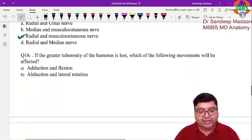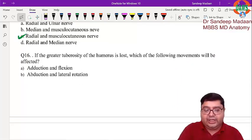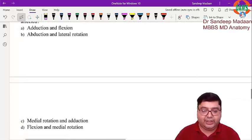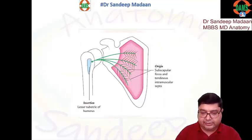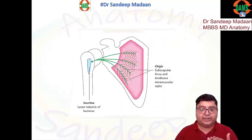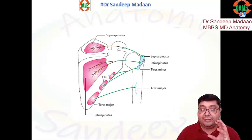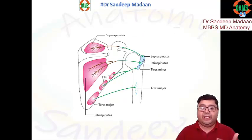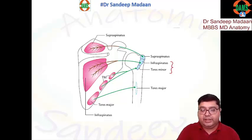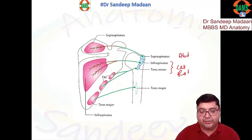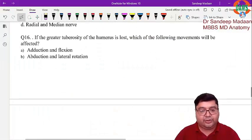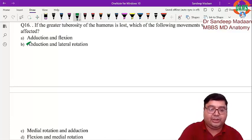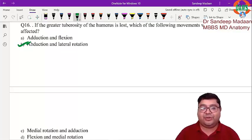If the greater tubercle is lost, which movements will be affected? Three muscles attach to the greater tubercle: supraspinatus, infraspinatus, and teres minor. Infraspinatus and teres minor are lateral rotators, and supraspinatus performs abduction. Therefore, if the greater tubercle is lost, lateral rotation and abduction will be lost. The answer is option D. Thank you everyone, take care, all the best.